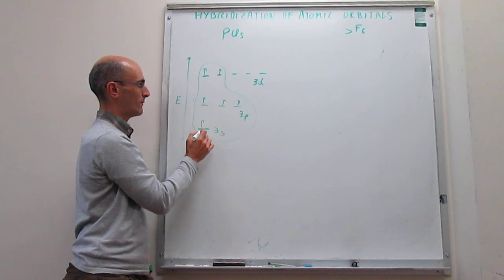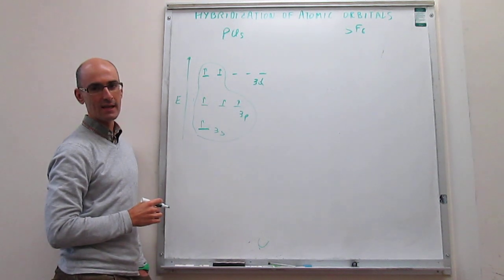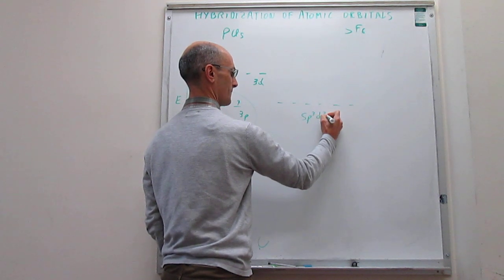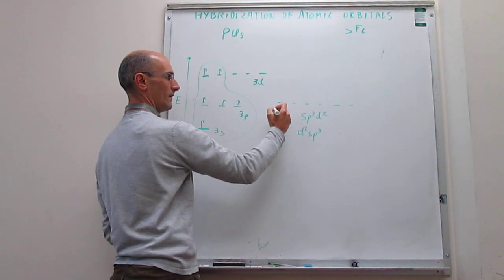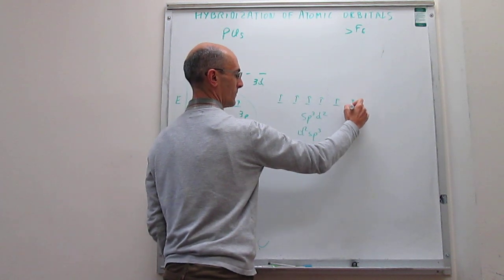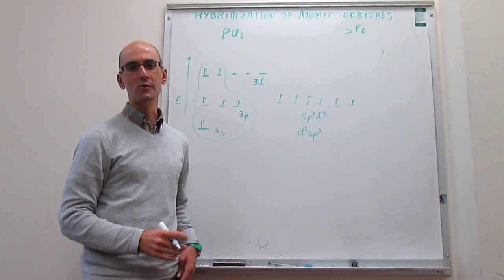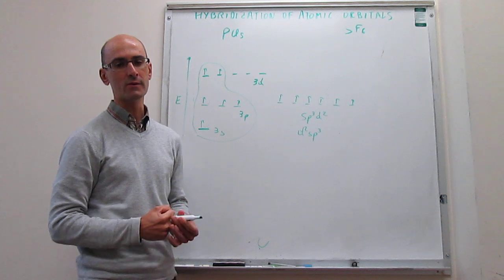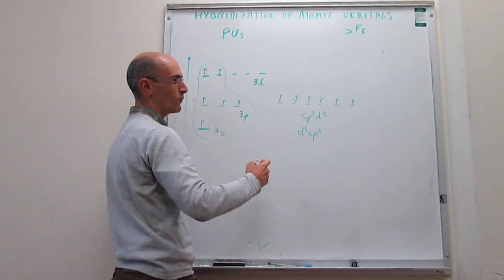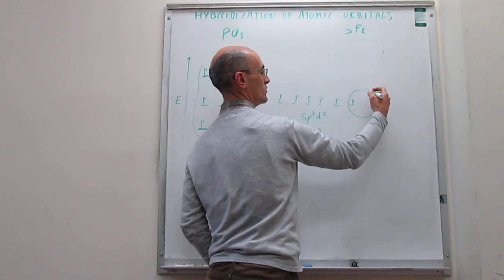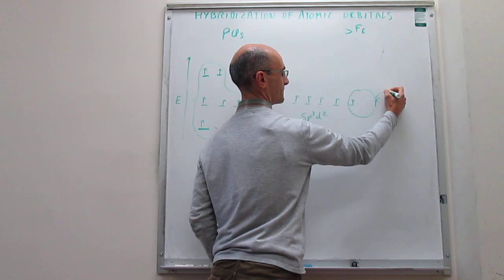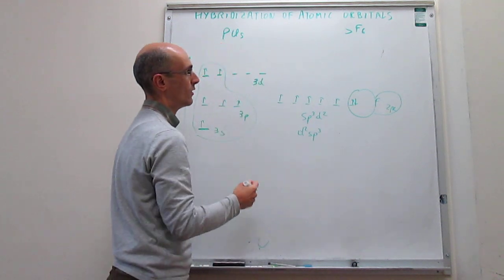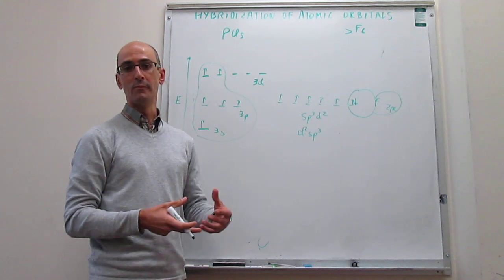The next step is hybridization: you form linear combinations of these six atomic orbitals to generate six hybrid orbitals, which is called sp3d2 hybridization — some books call this d2sp3 hybridization. Each one of the six orbitals will now have one electron and be identical, with their orientation toward the vertices of an octahedron. The bonds between sulfur and fluorine are sigma bonds between the singly-occupied 2p orbital of fluorine and the sp3d2 hybrid orbital of sulfur. All six bonds are sigma bonds, and the shape of the molecule is octahedral.